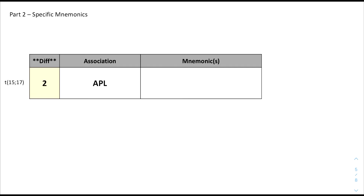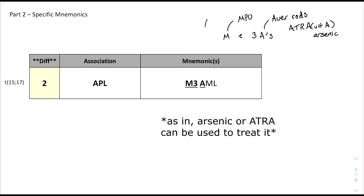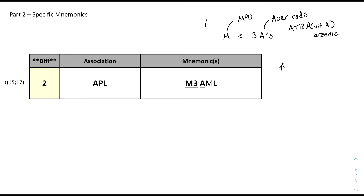With APL — acute promyelocytic leukemia — the mnemonics center around its previous name: the M3 subset of AML. M is for MPO (myeloperoxidase), which is positive in these cells and present in Auer rods on histology. The three A's: treatment is all-trans retinoic acid, which is vitamin A, and also arsenic. As a bonus, patients with APL if left untreated have increased risk of DIC.